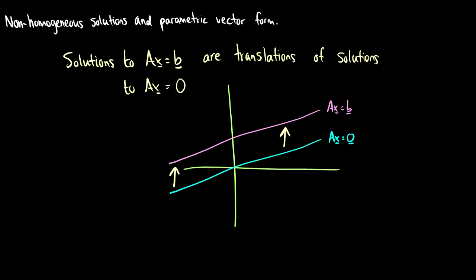Last time we looked at homogeneous systems of equations, and now we're going to take a look at non-homogeneous systems of equations. In non-homogeneous systems, we have ax is equal to b, and we say that these solutions to ax equals b are actually just translations of solutions to ax equals zero.